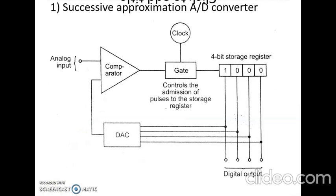The first type of analog-to-digital converter is the successive approximation analog-to-digital converter. This type is very widely used because it is fast in operation, has high resolution, and is less expensive.